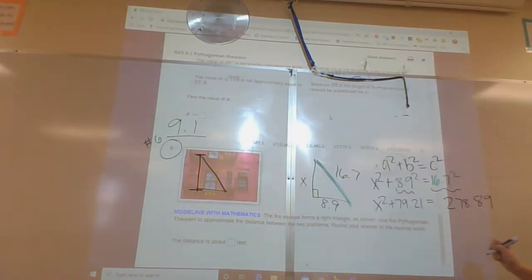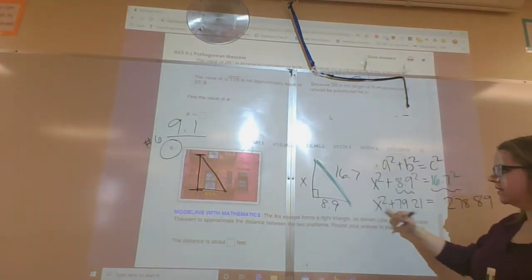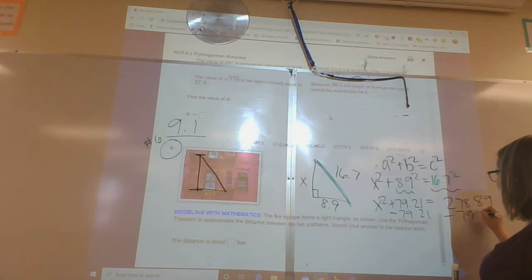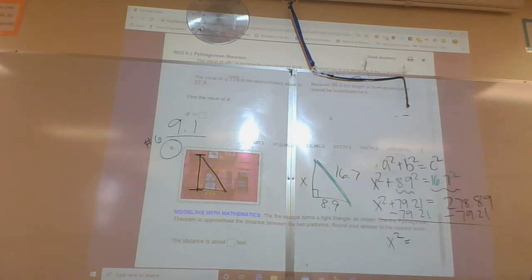Okay, so now I just have to subtract this. Yes, I got to get x alone, so I'm going to subtract this to the other side. So I have x squared equals, I'm going to subtract 79.21, and I get 199.68.